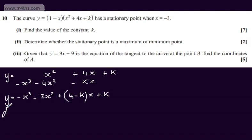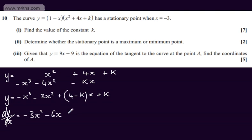What I'm now going to find is dy by dx, the gradient function. I need to multiply down by the power and drop the power by 1. So that gives minus 3x squared, minus 6x. If I differentiate the term in x, I simply get the constant, so that's going to be plus 4 minus k, and then differentiating the constant gives us 0.